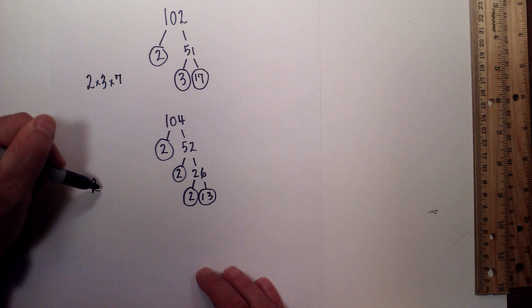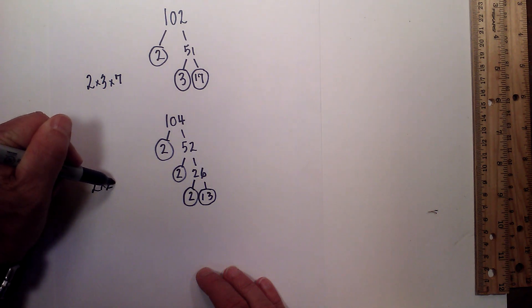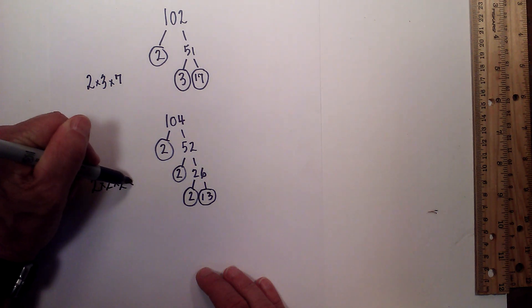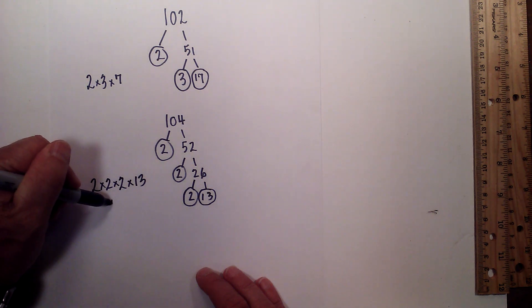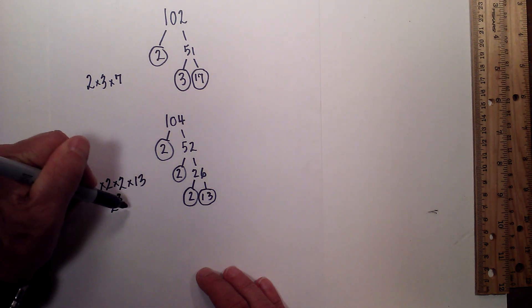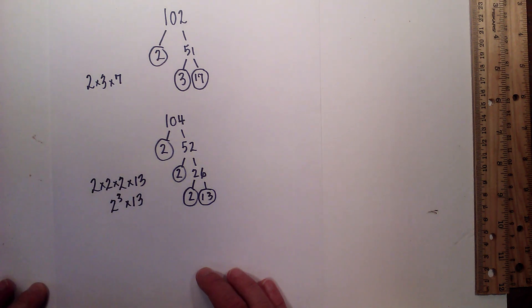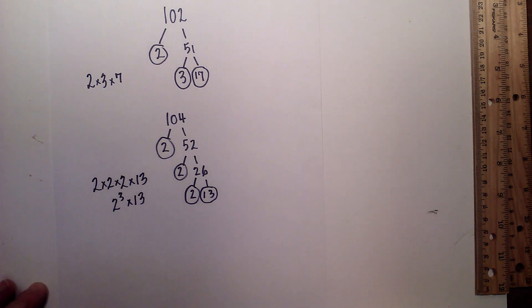Equals 2 times 2 times 2 times 13 or you could go 2 to the third times 13 and that would be the prime factorization of 104.